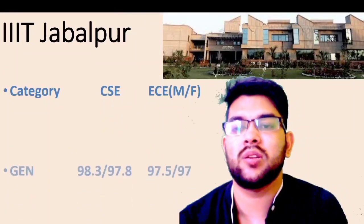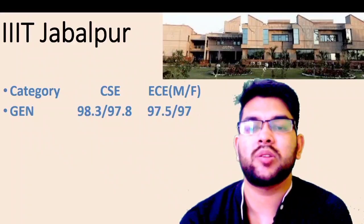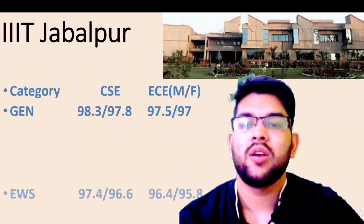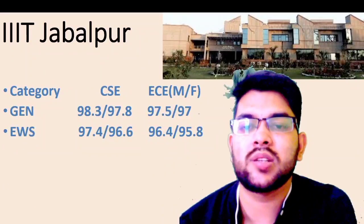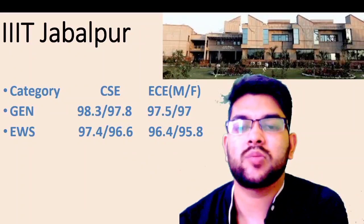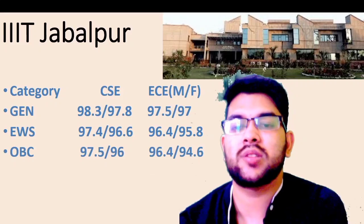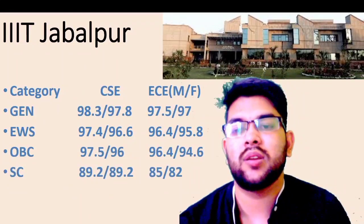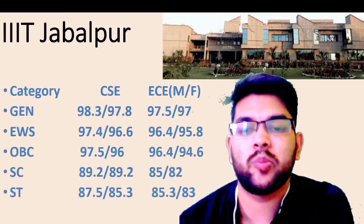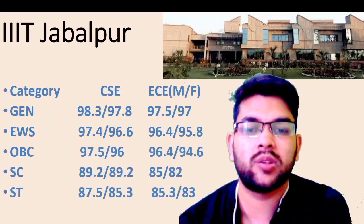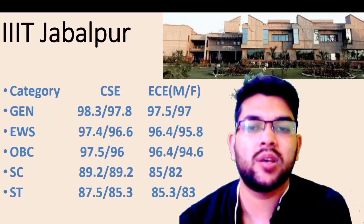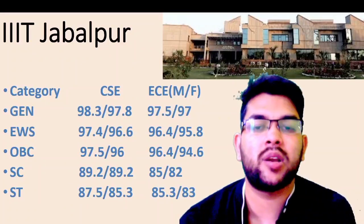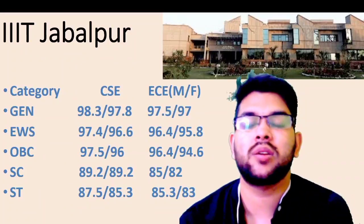For IIIT Jabalpur: General — CS male 98.3, female 97.8; for EC check sidewise. EWS — male 97.4, female 96.7. OBC — male 97.5, female 96. SC — male 89.2, female 89. ST — male 87.5, female 85.3. For EC, check sidewise. Values before the slash are for male and after the slash for female.